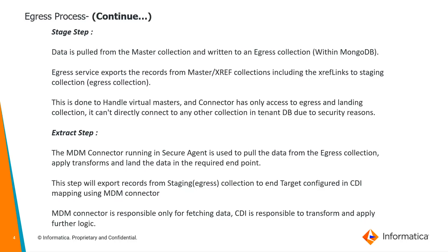This staging is done to handle virtual masters. The connector has only access to the egress and landing collection — it cannot directly connect to any other collection in the tenant DB due to security reasons. In the Extract step, the MDM connector running in the secure agent is used to pull the data from the egress collection, apply transforms, and land the data into the required endpoint.